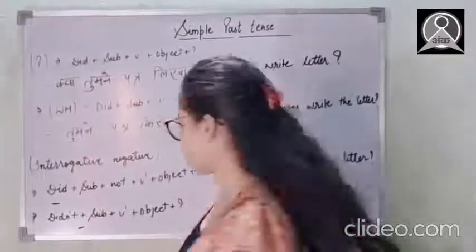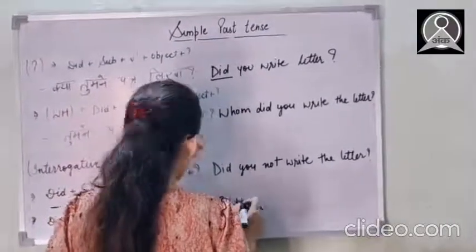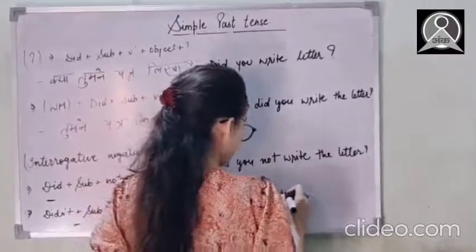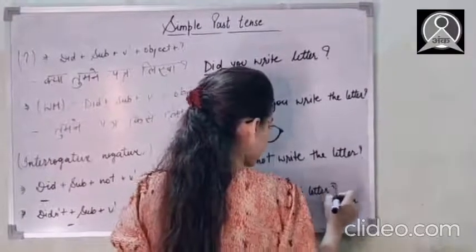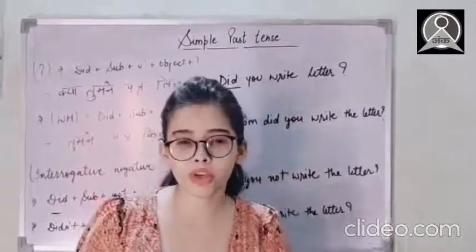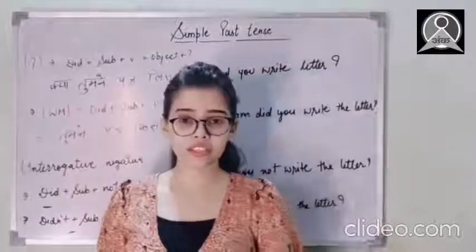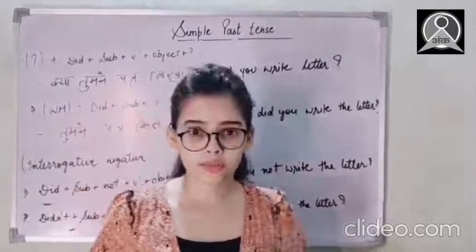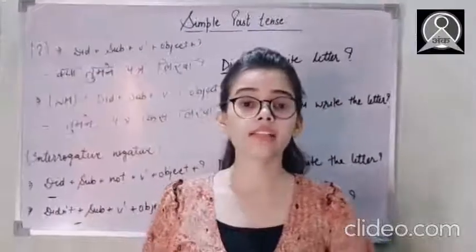So I will be scolding the subject so first we just translate it so didn't subject you verb's first form write then the object the letter question mark so here I'm angry. Because here that letter was a bit important and I believe that the subject will be doing that but he or she didn't so here I'm a bit Indian I'm like didn't you write the letter? It was important. So this is the difference please know this I hope today's topic is clear to all of you guys.